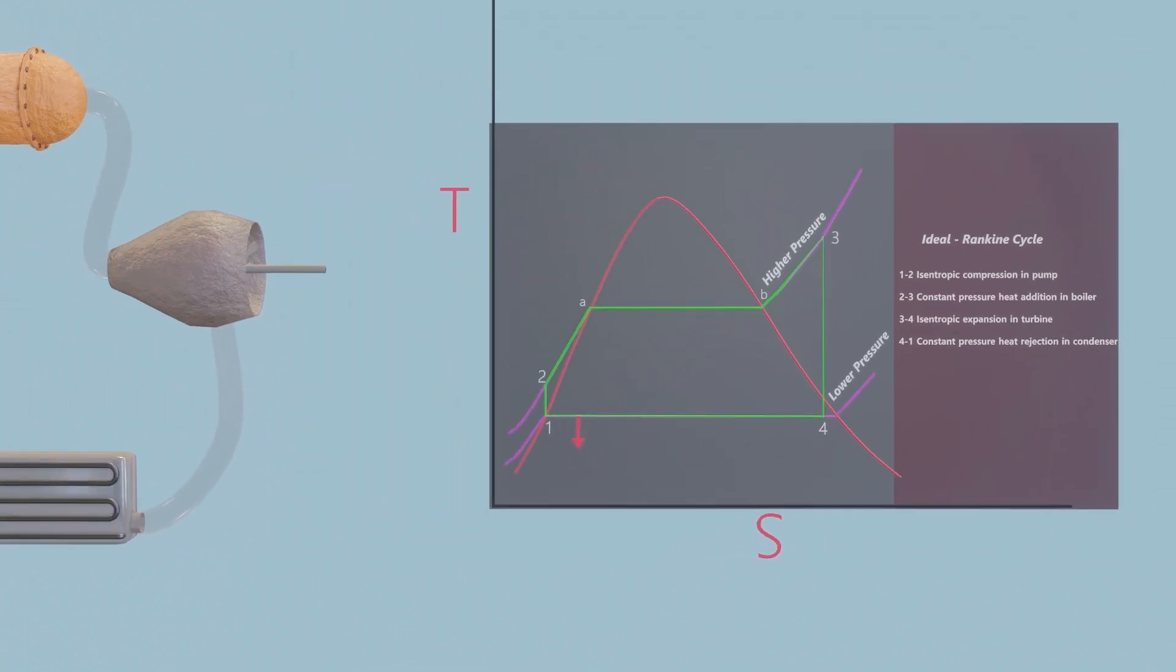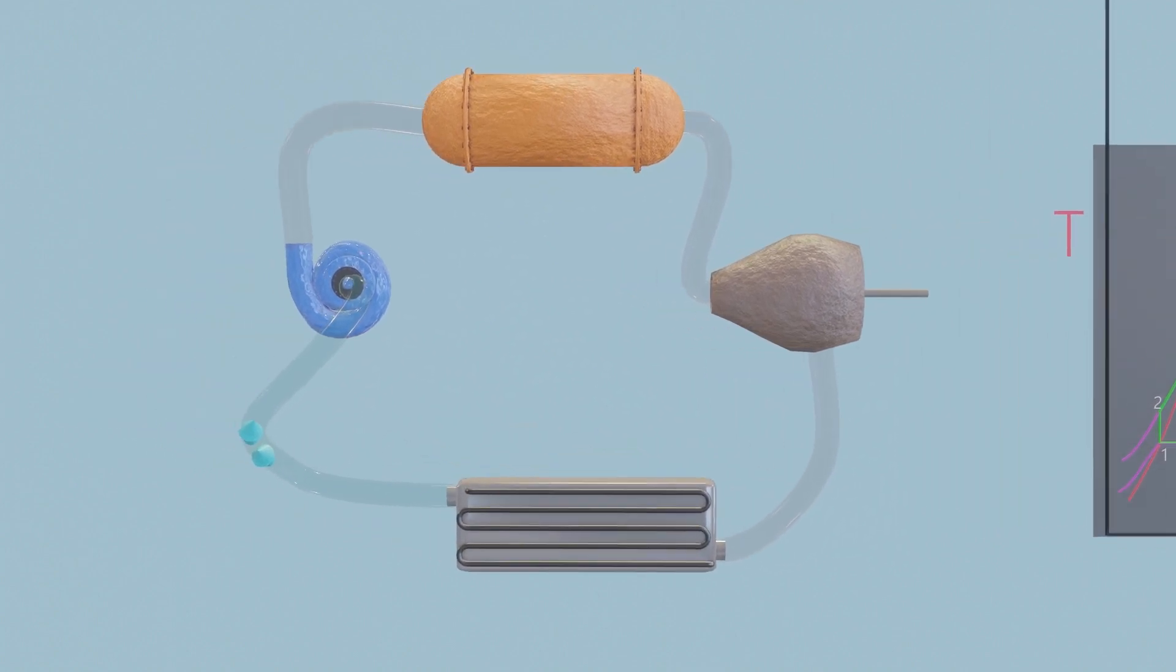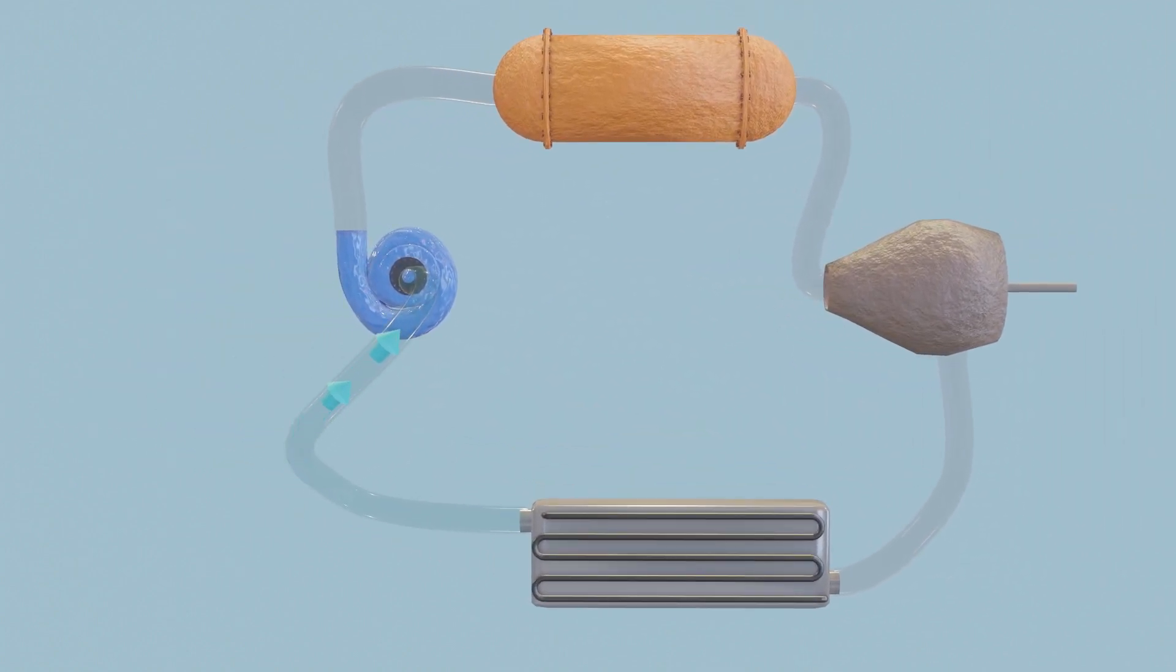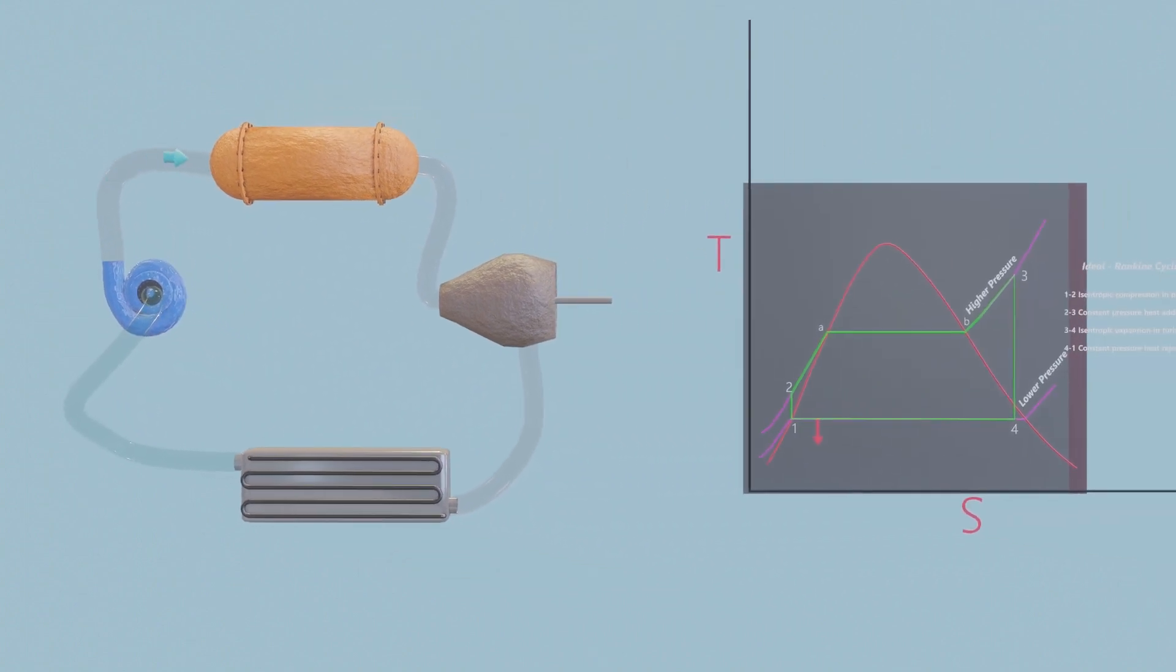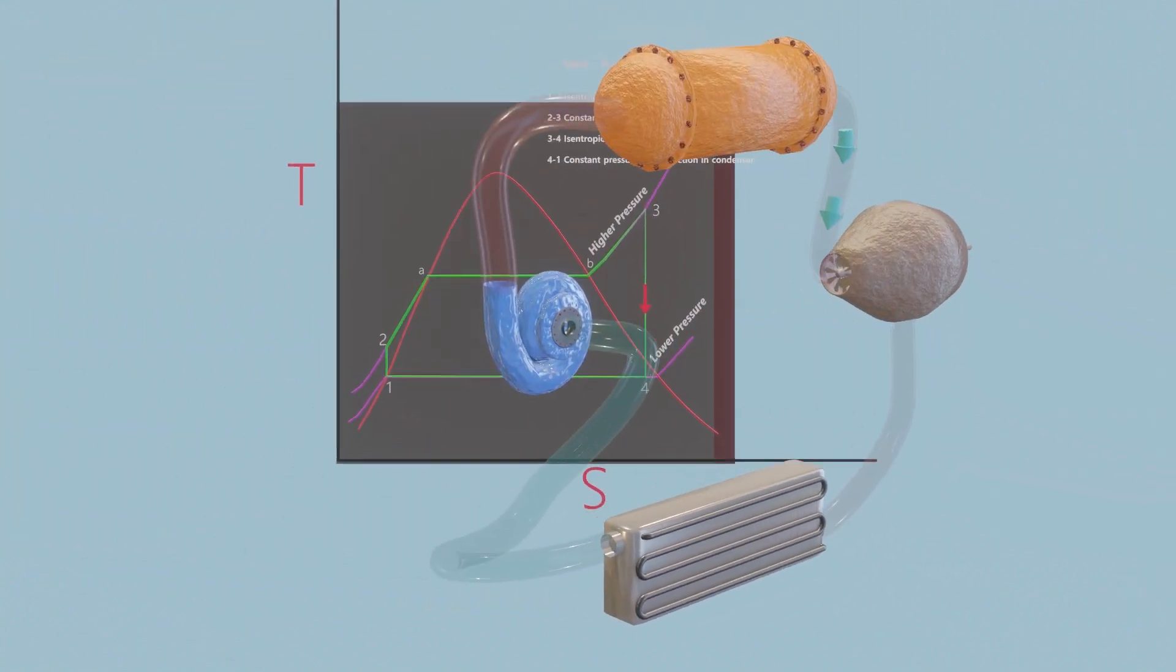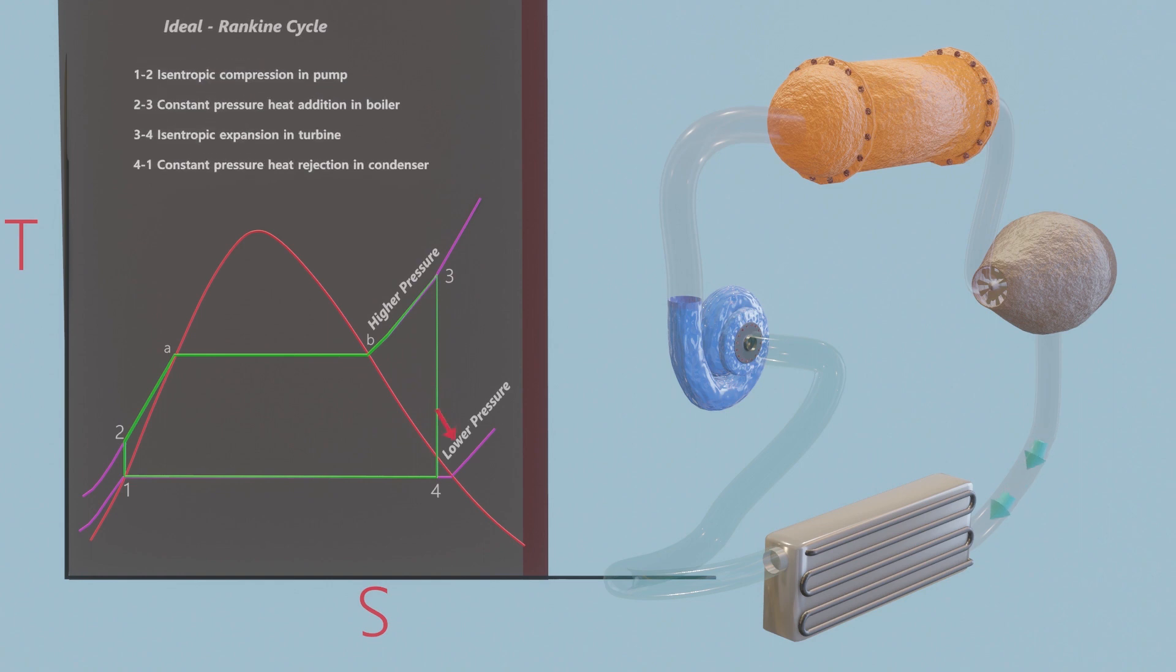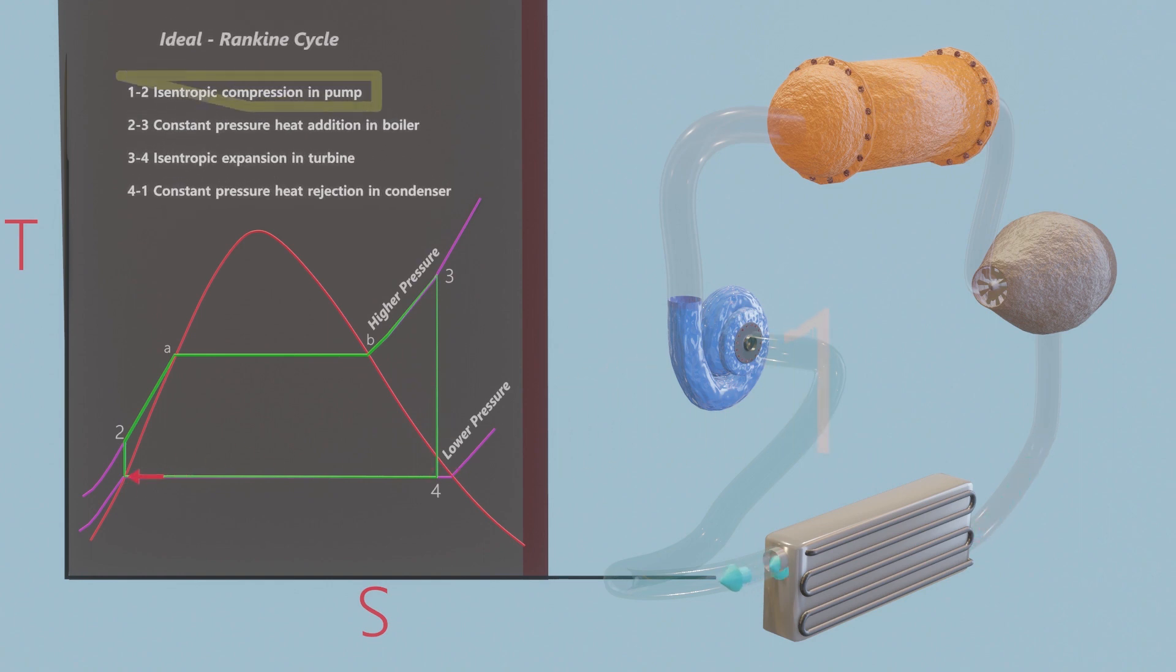Vaporizing and condensing water is done by steady flow devices. Let us again understand the Rankine cycle using steady flow devices. Water enters the pump at state 1 as saturated liquid and is compressed isentropically to the operating pressure of the boiler. The water temperature increases somewhat during this isentropic compression process.